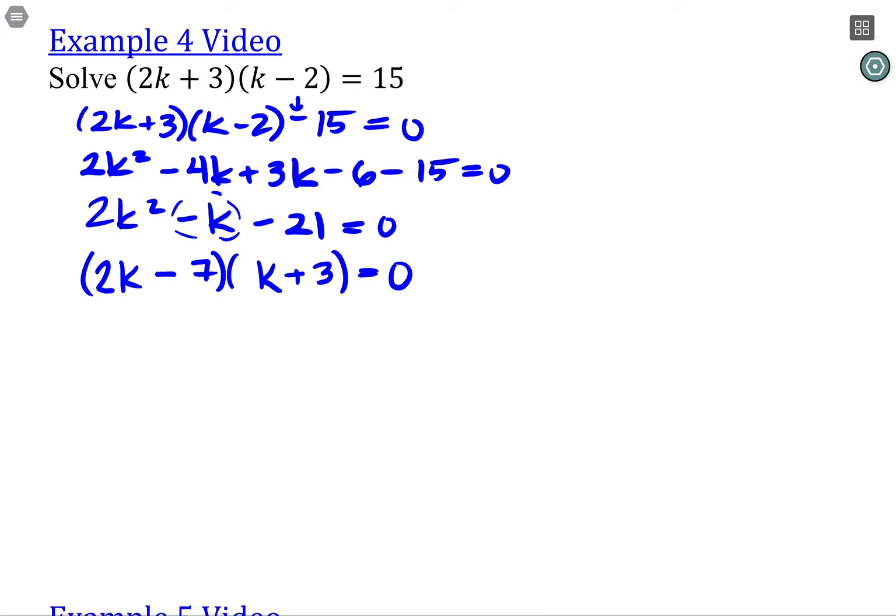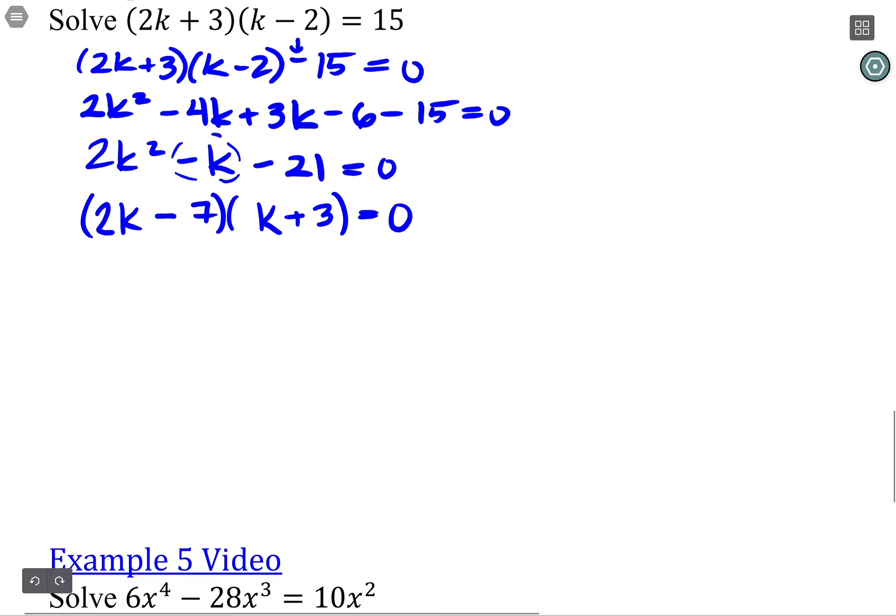Okay, so we can now pull that apart and set each factor equal to 0. The only way to make a product 0 is if one of the factors is 0, so this is the only way to make that original statement true.